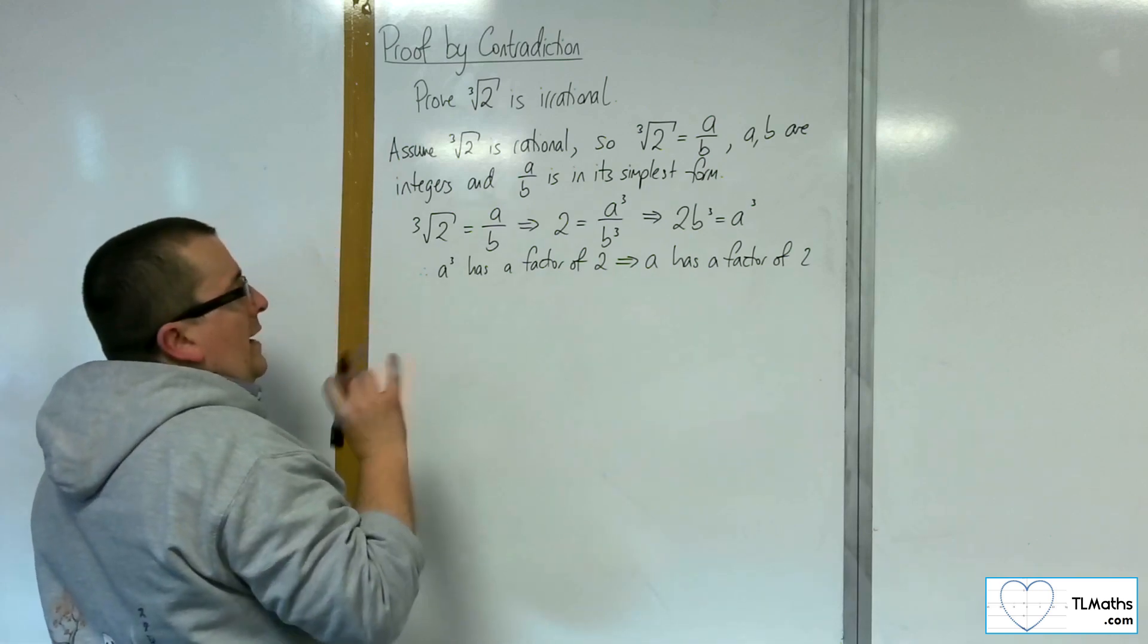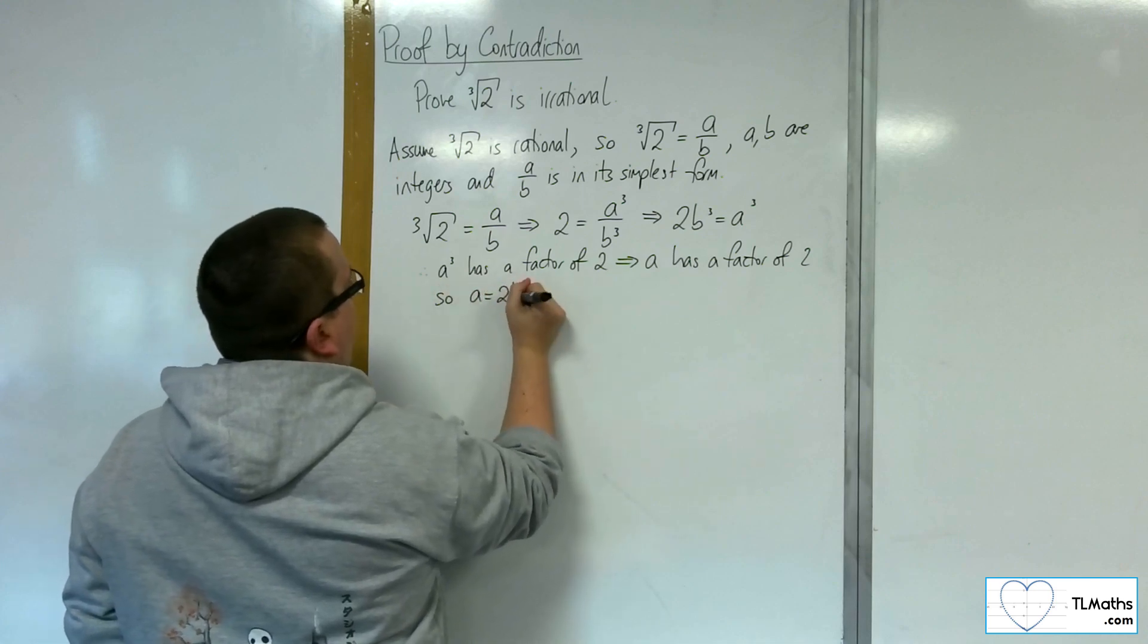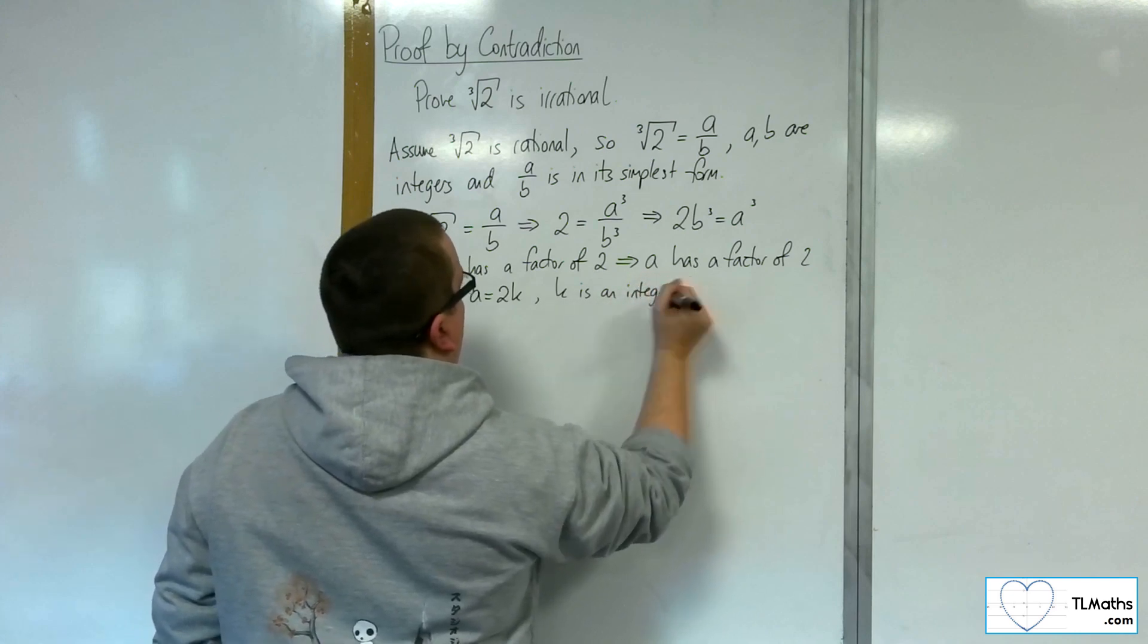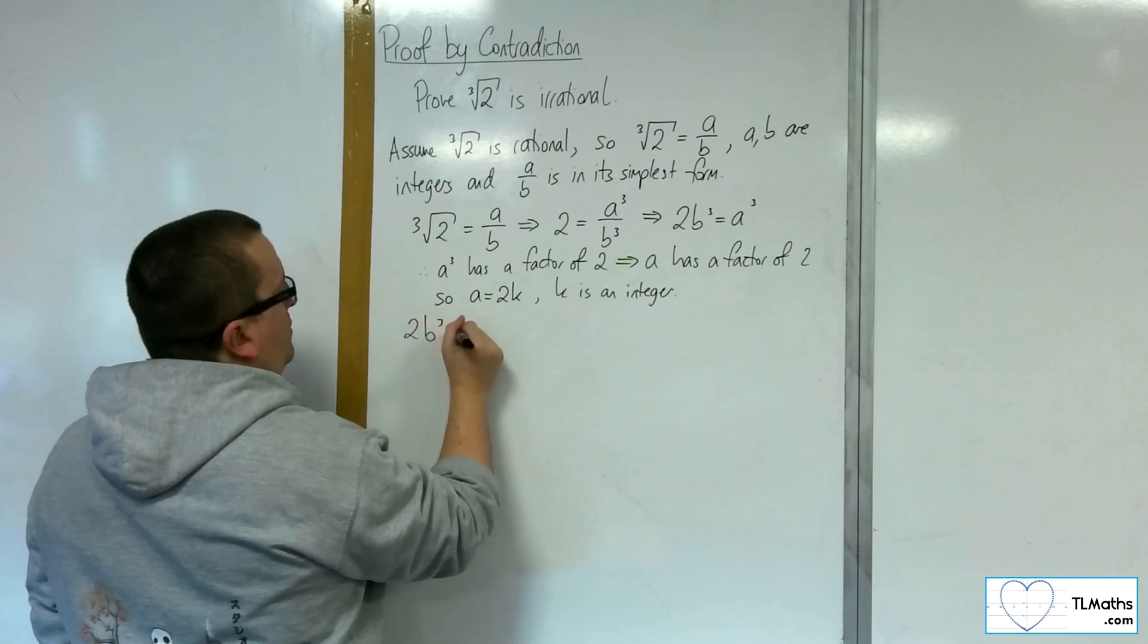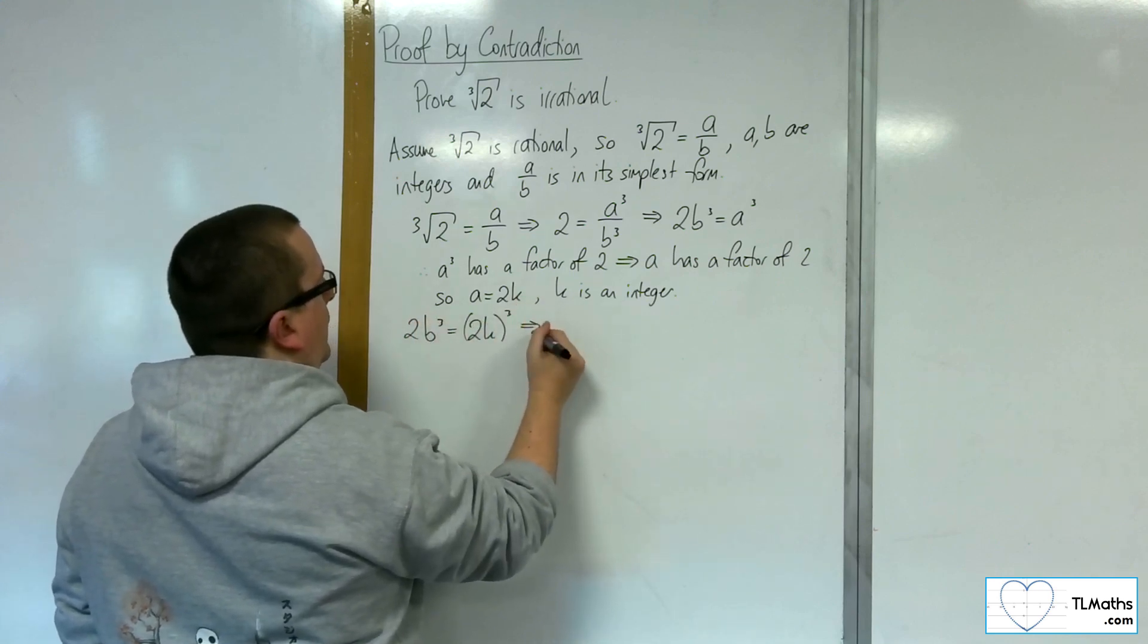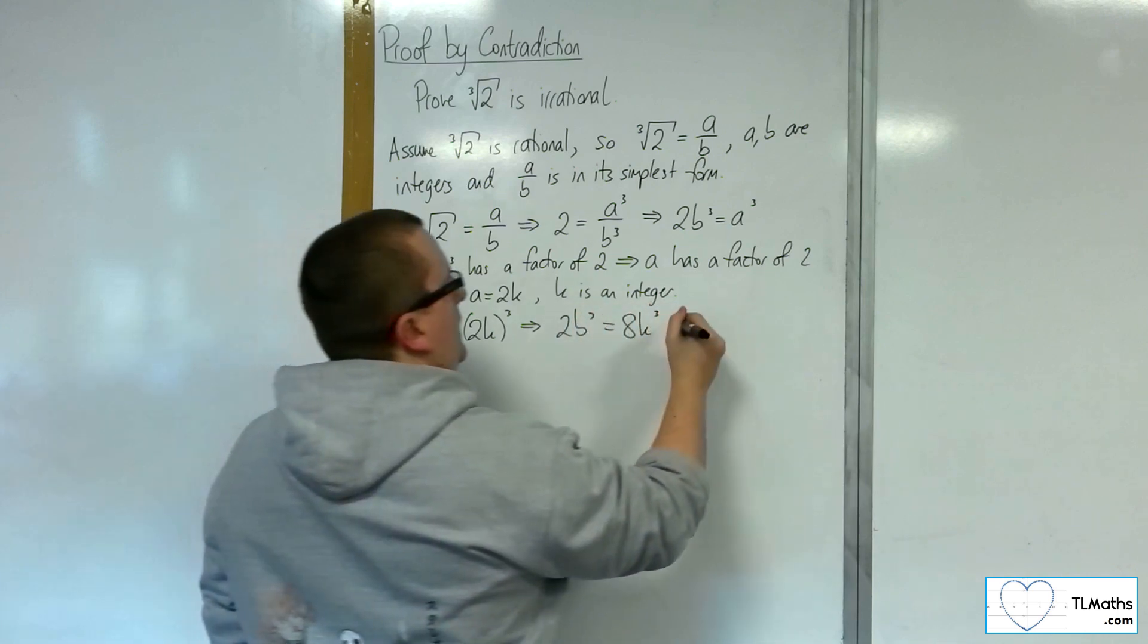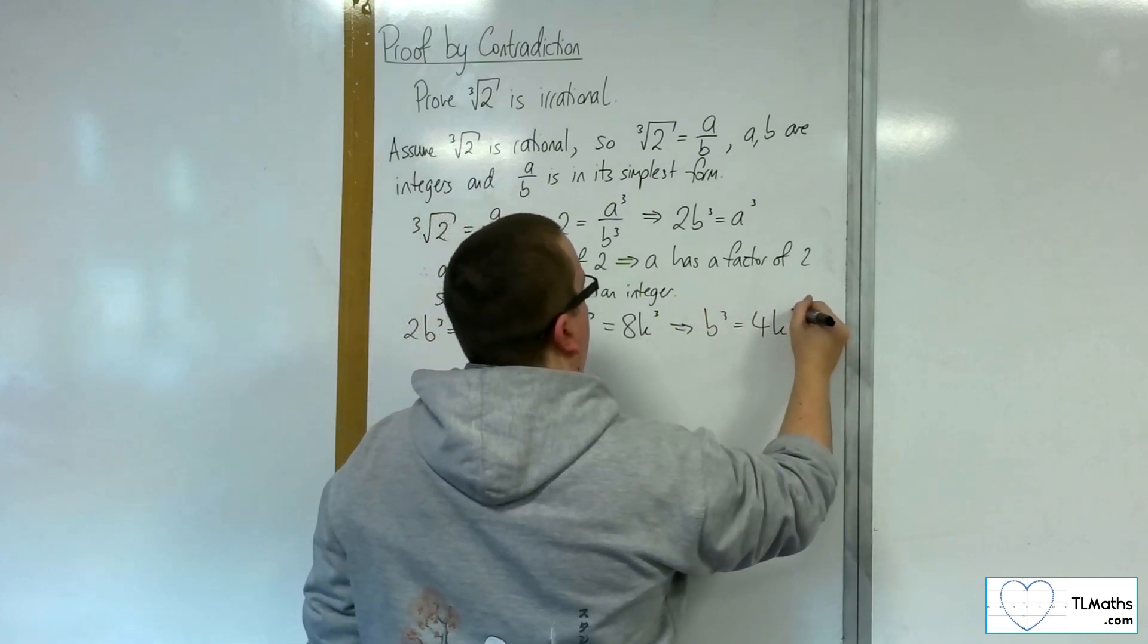Right, so if a has got a factor of 2, we can write a as 2 lots of k, where k is an integer. OK, so we've got that 2b cubed must be equal to 2k cubed. So 2b cubed is equal to 8k cubed, and so b cubed is equal to 4k cubed.